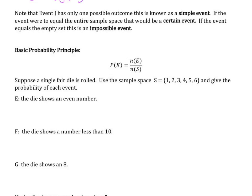So suppose a single fair die is rolled. Use the sample space that if we were to roll a die, we would have six options, one through six that would show up when we roll the die. What is the probability of the event that the die shows an even number? Well, there are six total possibilities, and of those possibilities, there are three of those that are even: two, four, six. So three of the six are even. So the probability is one half that we would get an even number.